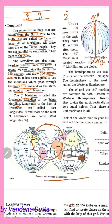This line is called longitude. Longitude to the east of Greenwich is called east longitude. The east side of the prime meridian line is called east longitude and the west side is called west longitude. The prime meridian divides the earth into two equal parts.